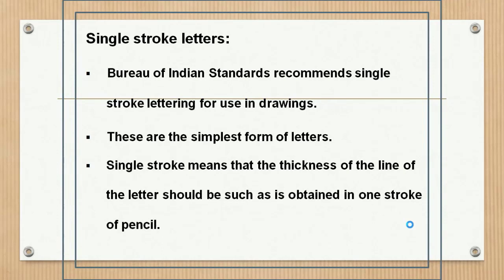The Bureau of Indian Standards IS 9609:2001 recommends single stroke lettering for use in engineering drawing. These are the simplest form of letters and are usually employed in most engineering drawings. The word 'single stroke' does not mean the letter should be made in one stroke without lifting the pencil. It means the thickness of the letter should be such as is obtained in one stroke of the pencil. The horizontal lines of the letter should be drawn from left to right and vertical or inclined lines from top to bottom.